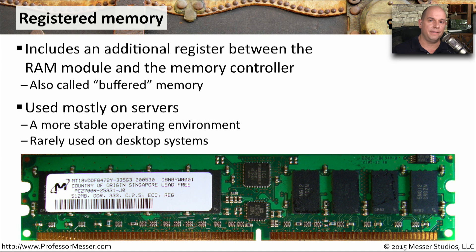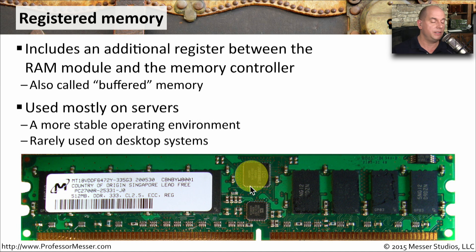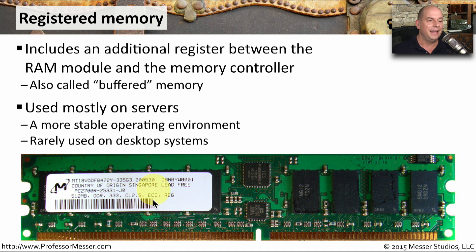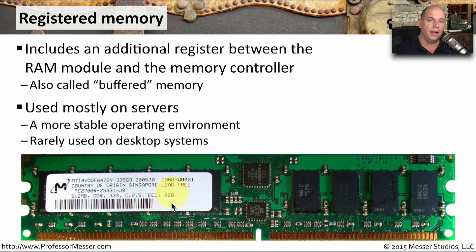You can sometimes visually identify registered memory because there may be additional chips right in the middle used as the buffer. Looking at an example memory module with a sticker, this is a 512 megabyte DDR memory running at 333 megahertz with a CL value of 2.5. It is ECC memory and also registered memory — you can see the REG label. These features can be used together; you can have ECC that is not registered, or non-ECC that is registered. But it's very common to see both ECC and registered memory used together, especially on high-end systems.